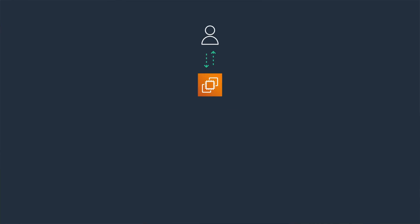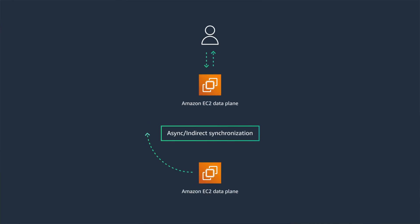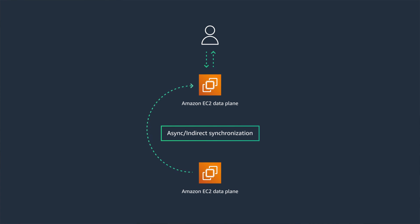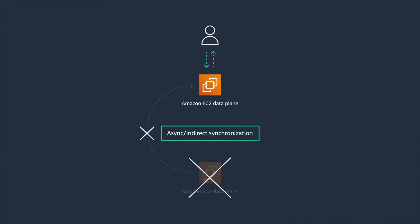What does this have to do with AWS? Well, at AWS, we would call this system a statically stable system. Static stability means your system doesn't have to react to or do anything different to make up for any lost functionality.